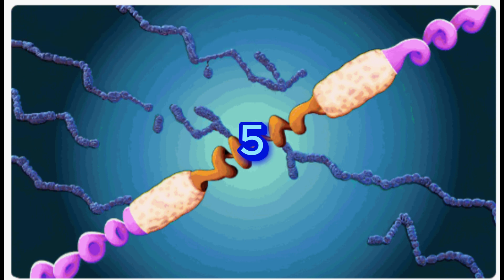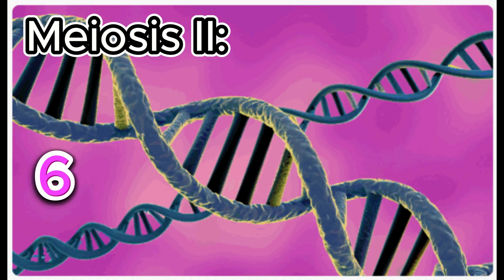Meiosis 2. Number 6: Prophase II. Chromosomes condense again. The nuclear membrane may disintegrate once more.